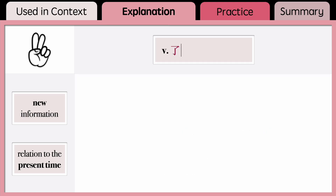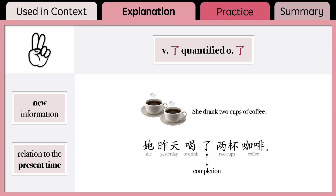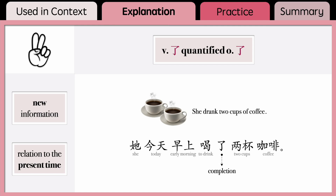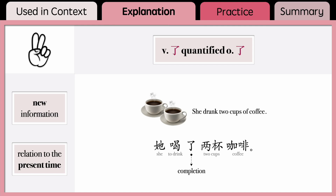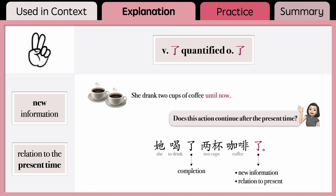Now let's look at the second case: when the completed action has quantified objects. To say 'she drank two cups of coffee,' you can say 她喝了两杯咖啡. By adding 了 after the action verb, you indicate that the action of drinking is completed, but it has no relation to the present time — it could be 她昨天喝了两杯咖啡 or 她今天早上喝了两杯咖啡. However, if you add 了 at the end of the sentence, you are not only prompting the perceived new information of her drinking two cups of coffee, but also implying that she drank two cups of coffee until now, expressing its relation to the present time. Whether she'll continue to drink a third cup or not is up to her.